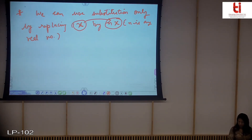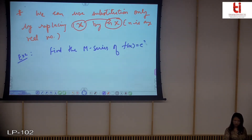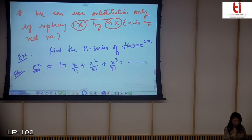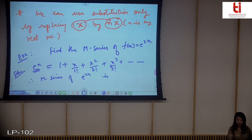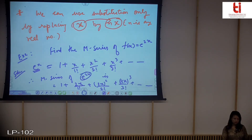For example, if asked to find the Maclaurin series of f(x) = e^{2x}, you already know the Maclaurin series of e^x. By substitution, the Maclaurin series of e^{2x} is simply obtained by substituting 2x in place of x. We can also find Maclaurin series by multiplication, which leads to the next topic: Taylor series by multiplication.